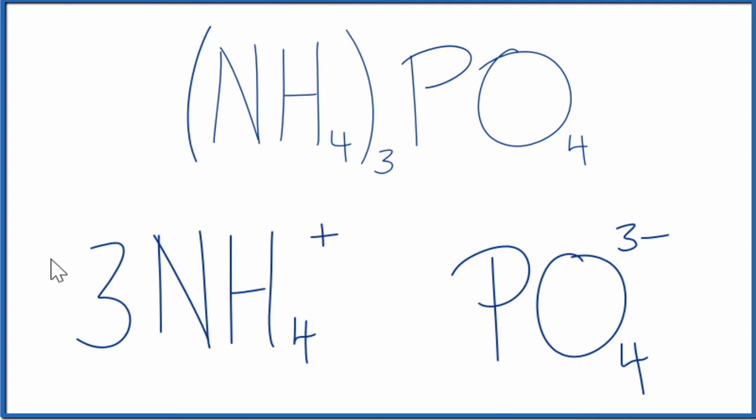So three times one plus, that's three plus. That balances the three minus. This is an ionic charge because each of these ions, these polyatomic ions, has a charge. They're attracted, and we have an ionic bond.